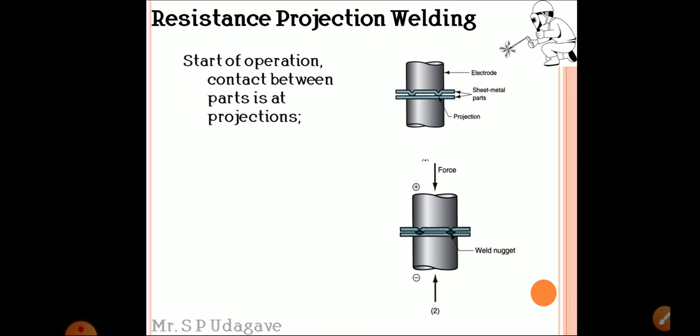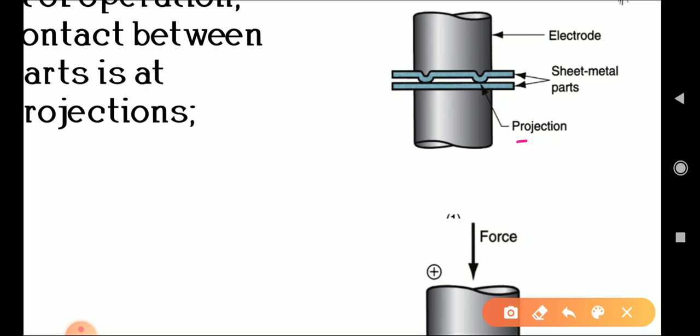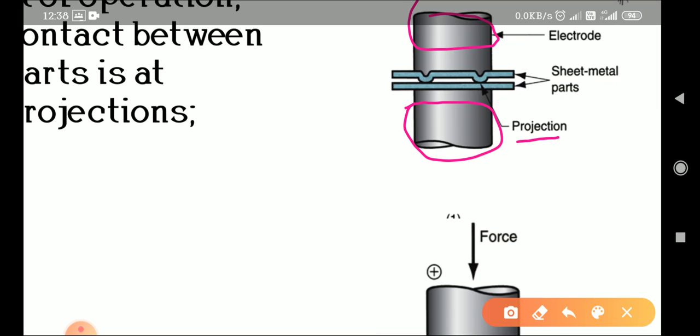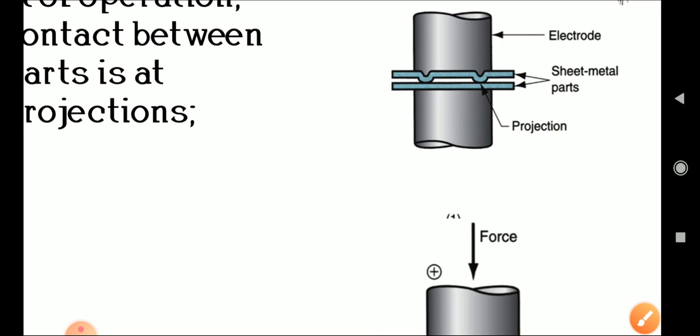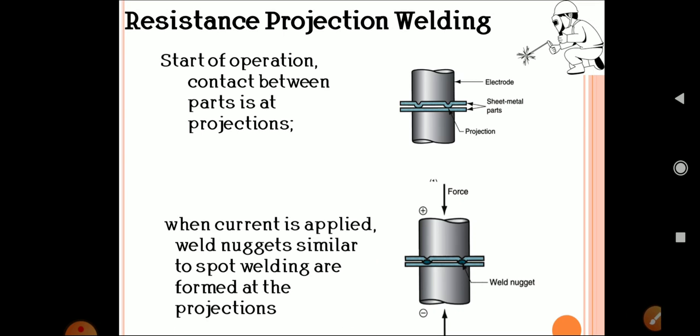The projection is shown with the lower one being a simple plane sheet. We place it above the lower electrode and between the upper electrode, and we apply force. We pass the current and a welding nugget is produced, shown in figure two. In the first step, at start of operation, contact between the parts is at the projections - small projections are provided.